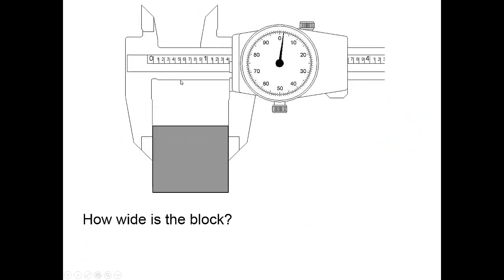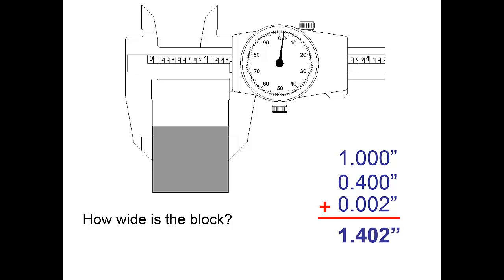How wide is the block? Let's do this one together. I see a big one so it's going to be one inch, one point. Can I see the line behind the four? Just barely so I'm going to read the four. One point four and then I go to the dial zero two. One point four zero two is how I would measure that.